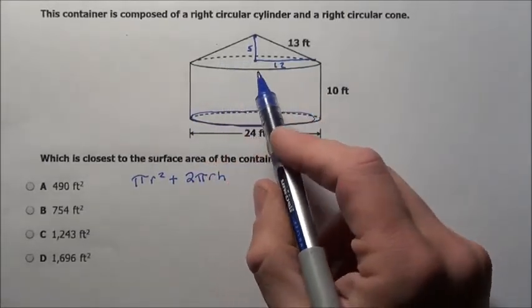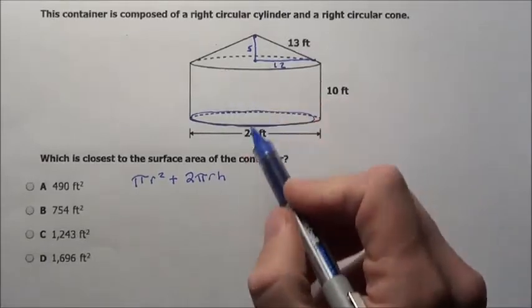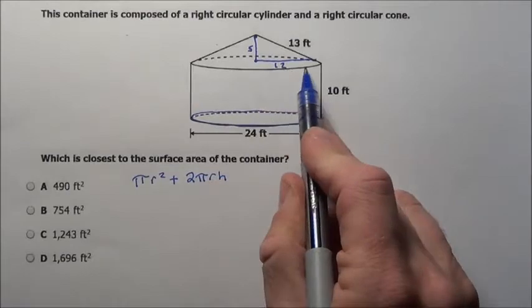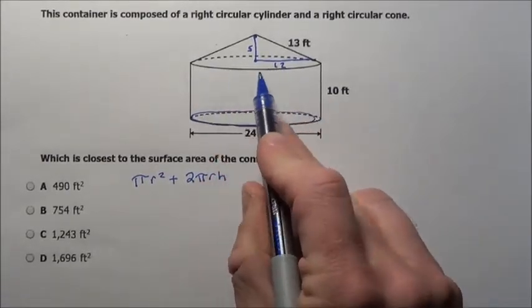Now I just need the around the cone, just around it. So I need the lateral area there. Notice that this top is covered right here, so I'm not going to be getting any area there.